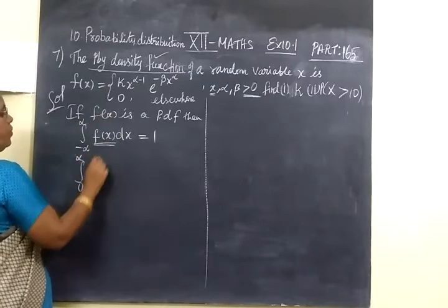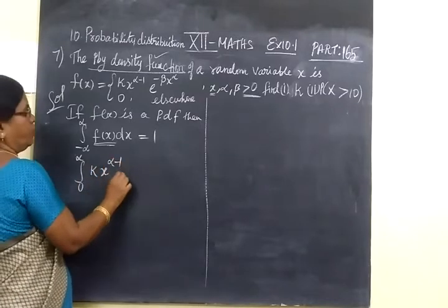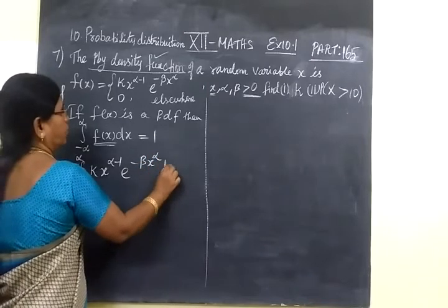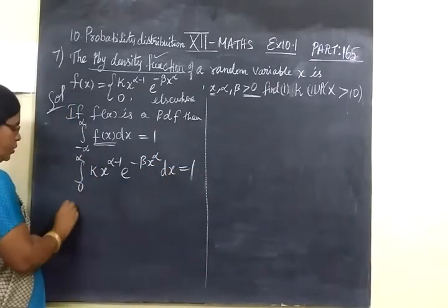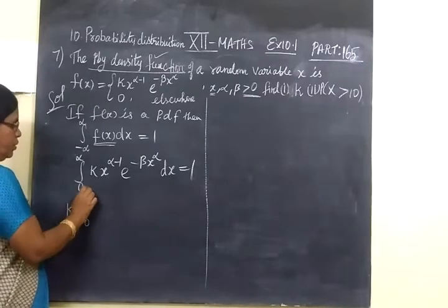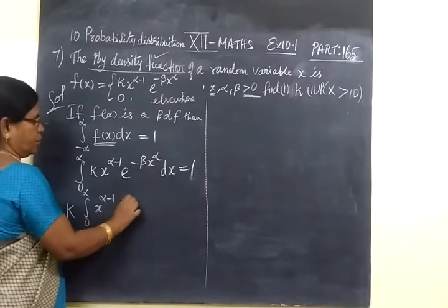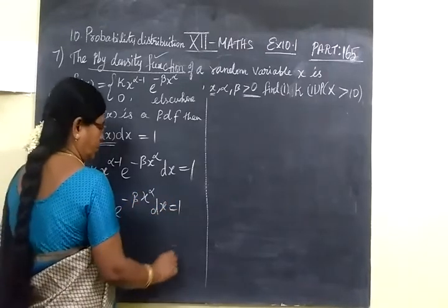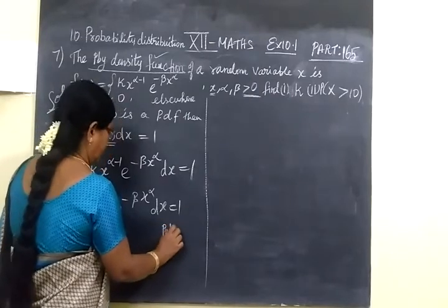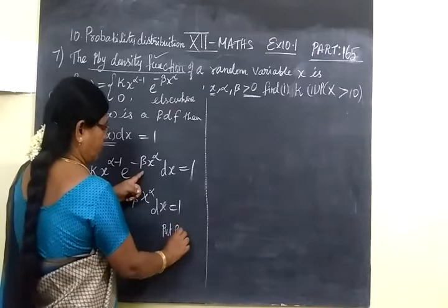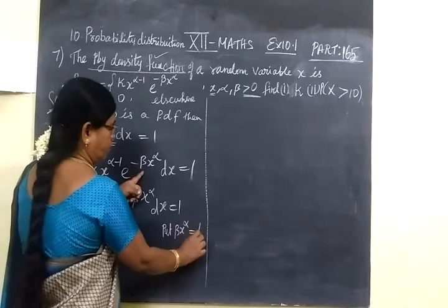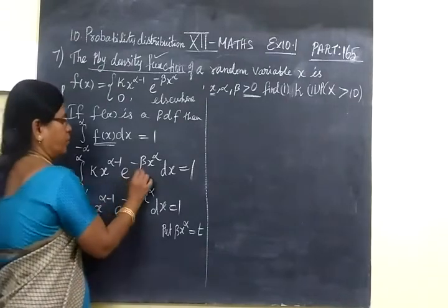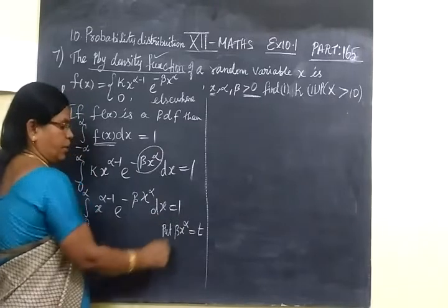Now F of X: we write F of X as K·x^(α-1)·e^(-β·x^α) dx equal to 1. Take K outside. Now put the substitution: let β·x^α equal to some T, so E power minus β·x^α, and we consider this and substitute it as T.